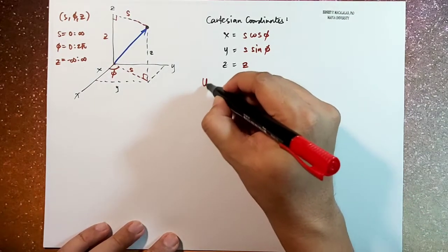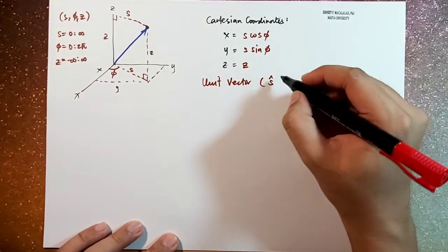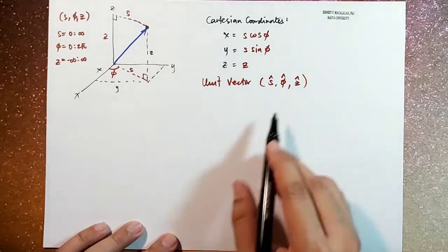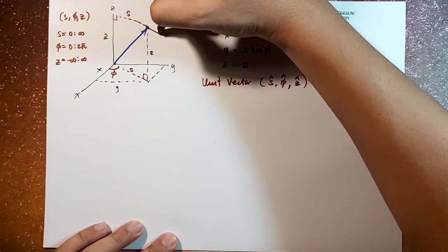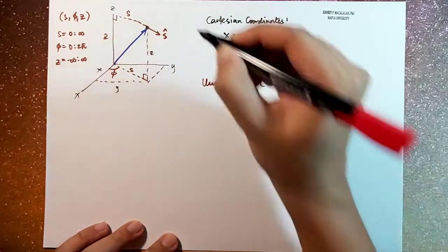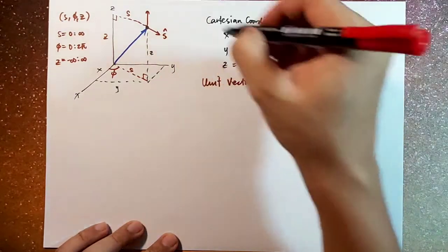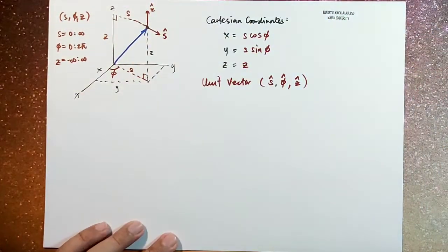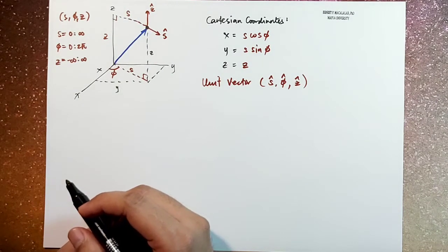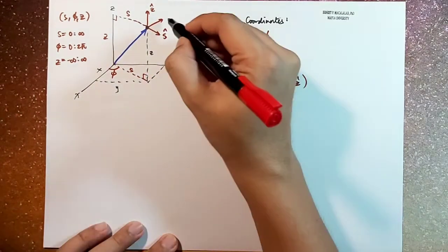So the unit vectors, which is given by s hat, phi hat, and z hat. So your s hat will be along this direction, pointing away from the z axis. This is your s hat. Your z hat is pointing the same as your z hat in the Cartesian coordinate system. And then phi hat would be the same direction as what you have in your spherical coordinate system, which is along this direction. This is phi hat.